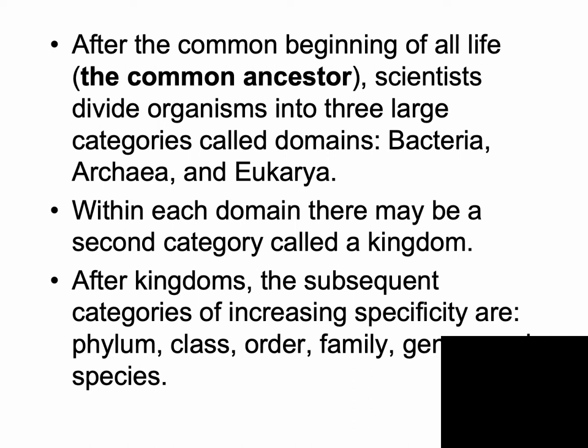At the beginning of life there is a hypothetical common ancestor, and from that common ancestor scientists divide organisms into three points of origin: the bacteria, the archaea, and the eukarya domains. Within each domain there is a next category, and those categories go from domain, then kingdom, phylum, class, order, family, genus, and species.